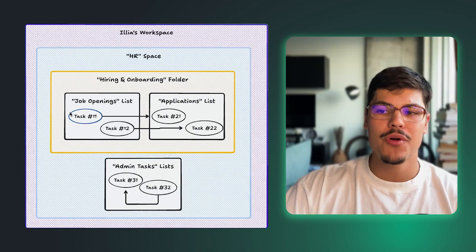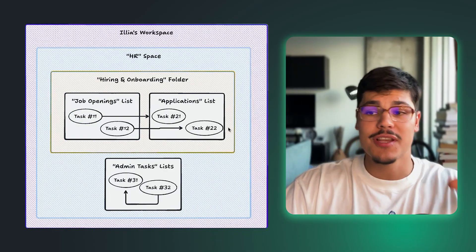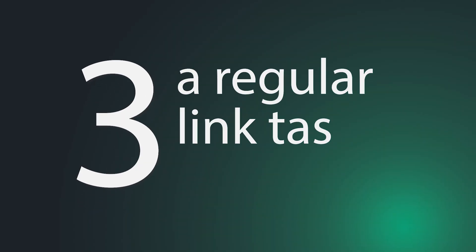Reviewing the ClickUp relationship custom field, we understood how to link two tasks from different lists and pre-define the relationship they have — in this example, job openings linking to applications and vice versa. But what if you just need to link two tasks together without overthinking it or pre-defining the relationship type? In that case there is a third option: using the regular 'link task' feature.